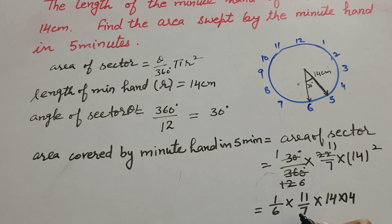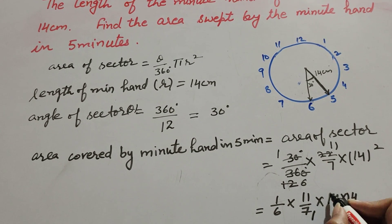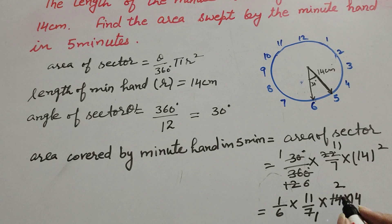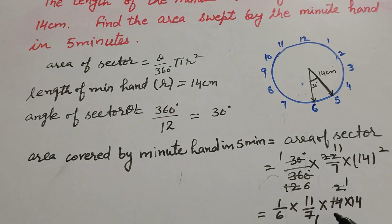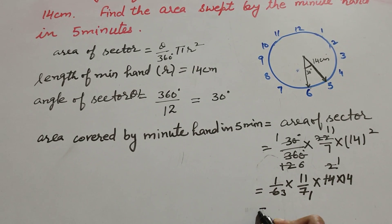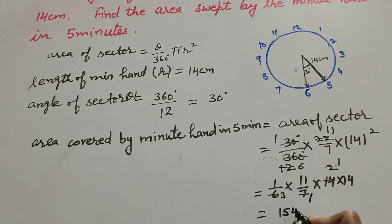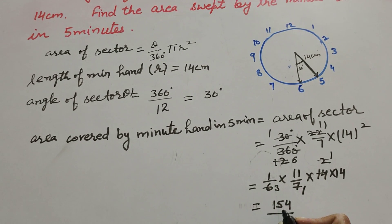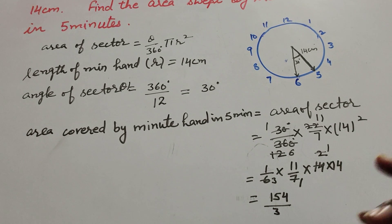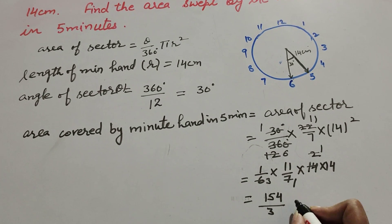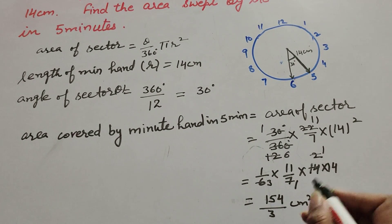We write 14 squared as 14 multiplied by 14. Since 14 and 7 are both divisible by 7, we cancel them: 7 ones are 7, 7 twos are 14, giving 2. Then 2 and 6 are both divisible by 2: 2 ones are 2, 2 threes are 6, giving 3. So the result is 11 multiplied by 14, which is 154, over 1 multiplied by 3, which is 3. Therefore, the area covered by the minute hand in 5 minutes is equal to 154 over 3 centimeters squared.